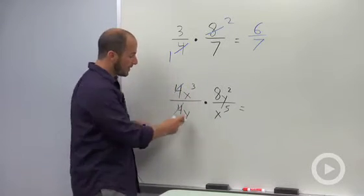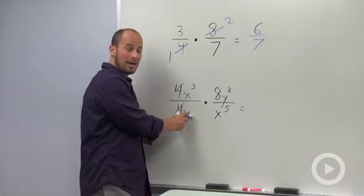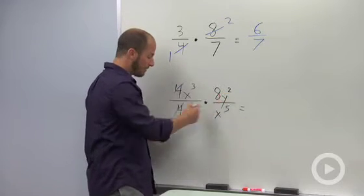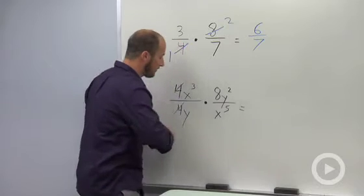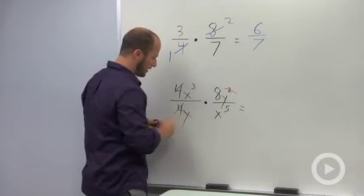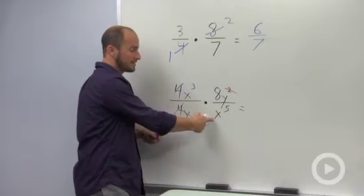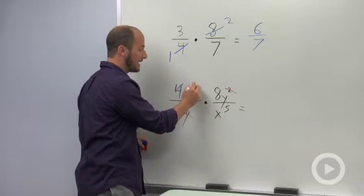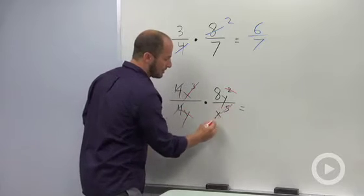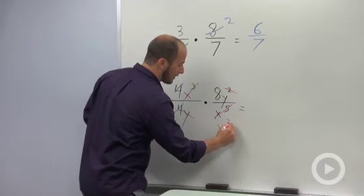So I'm going to cancel the 4 and 4 here. We then have a y in the bottom and a y squared in the top, so I'm going to go ahead and cancel one of those y's. X cubed in the top, x to the fifth in the bottom, so this is 3x's, this is 5x's. We can actually go ahead and cancel 3 of those. So then this ends up being x squared.